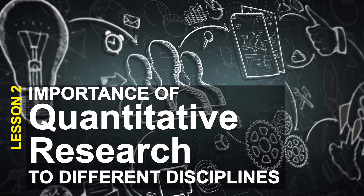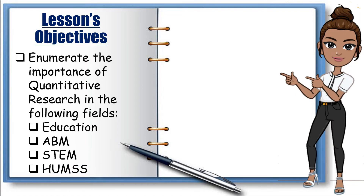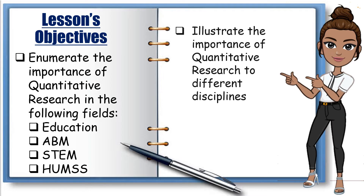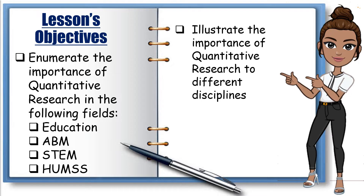Ladies and gentlemen, our lesson 2. At the end of this lesson, you are expected to enumerate the importance of quantitative research in the following fields: education, ABM, STEM, and HMS, as well as illustrate the importance of quantitative research to different disciplines.